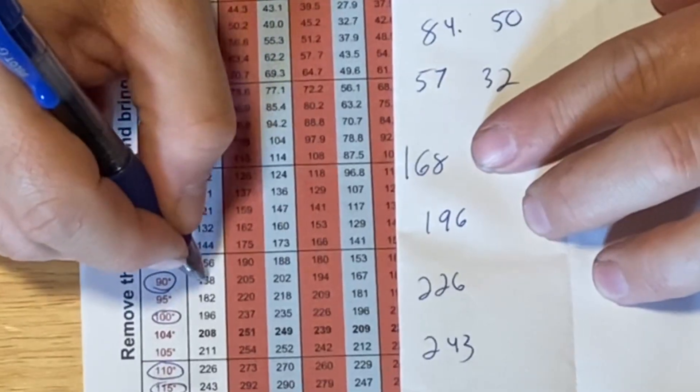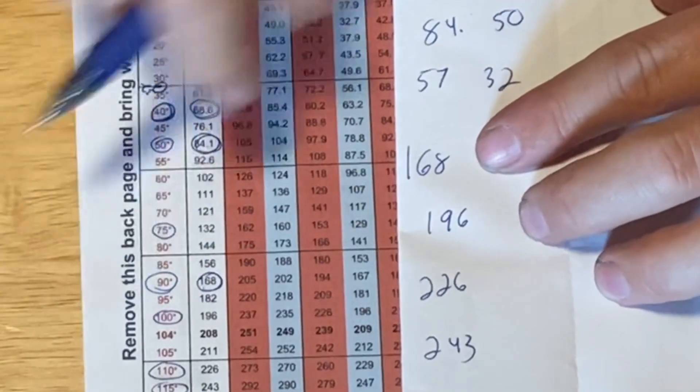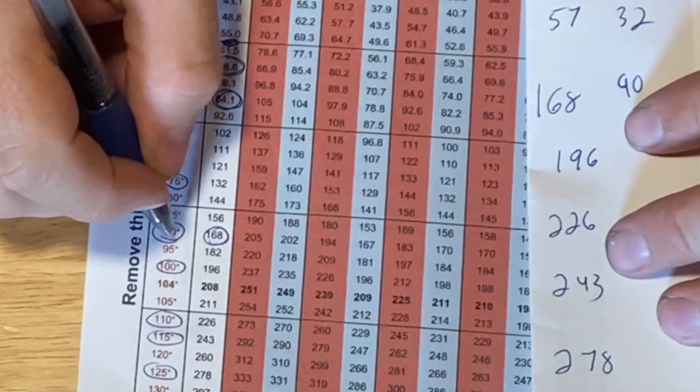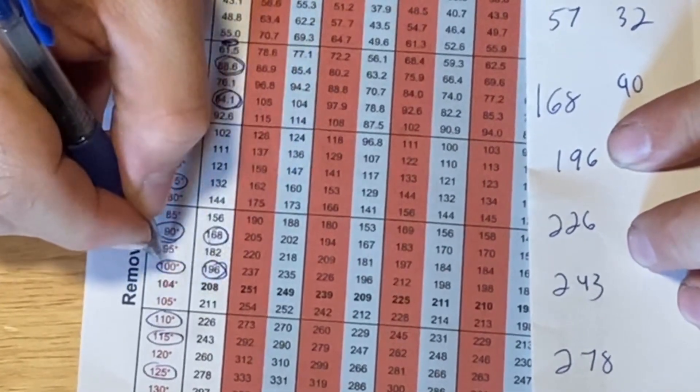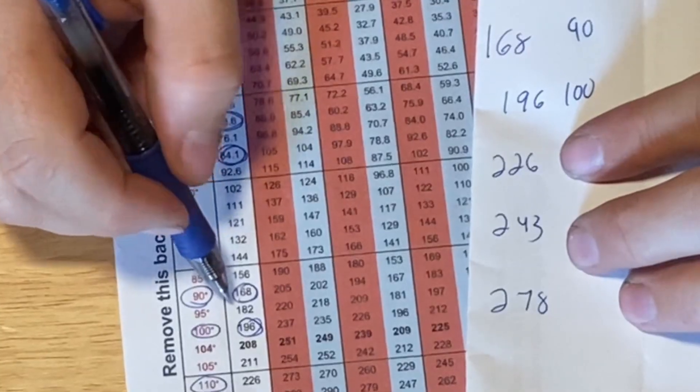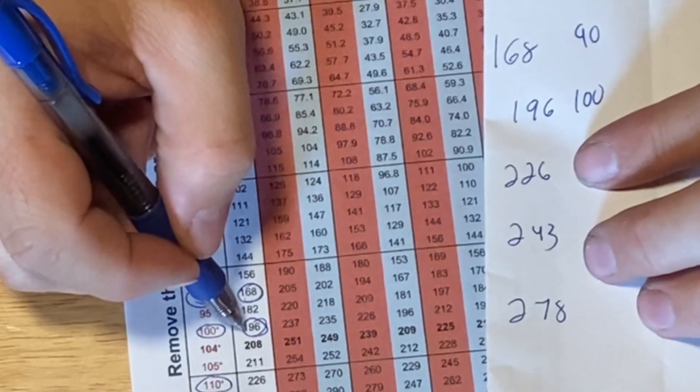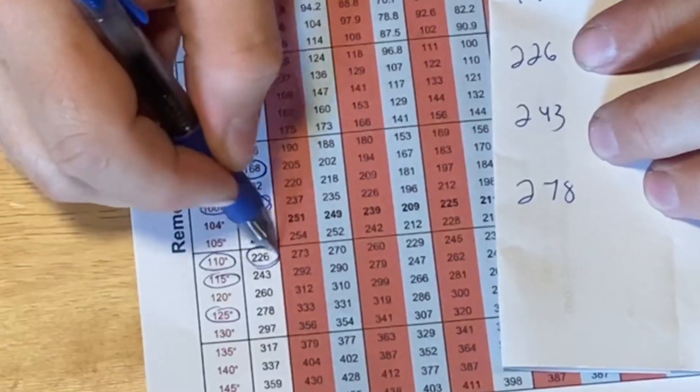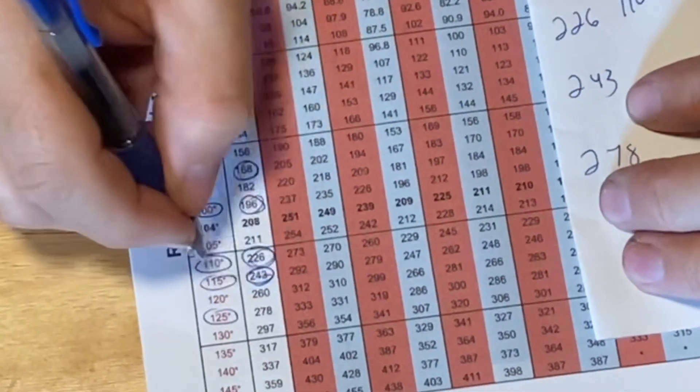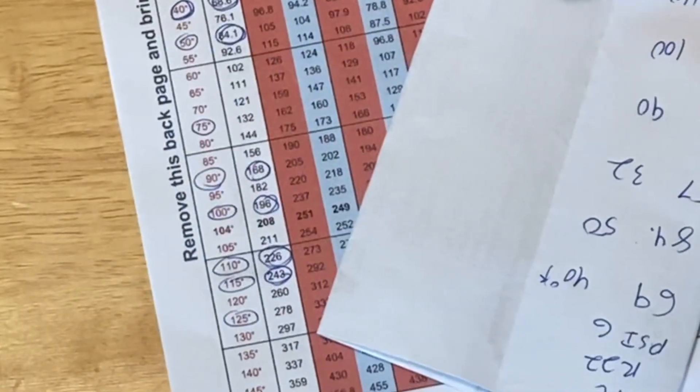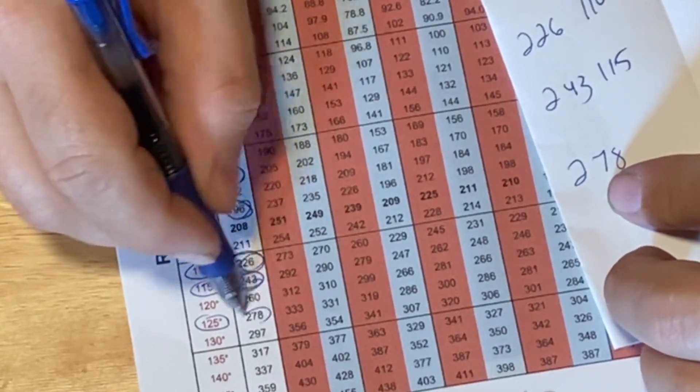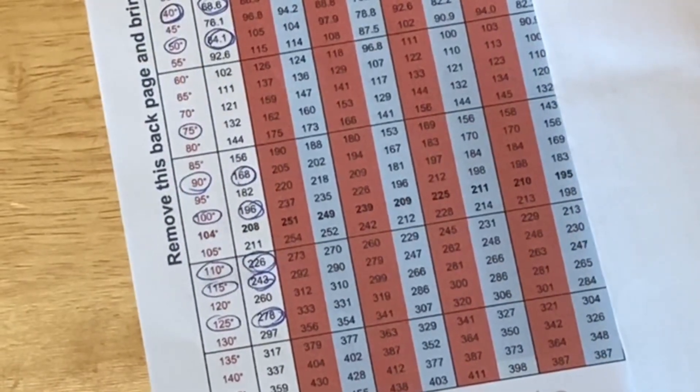Next on the list we have 168. So this could be the high side the red gauge. 168 converts to a saturated temperature of 90 degrees Fahrenheit. 90 would be warmer than the air temperature outside. So we have another temperature of 196. 196 converts to a saturated temperature of 100 degrees Fahrenheit. Now we have 226. That converts to a saturated temperature of 110. And we have 243 converts to a saturated temperature of 115. And then we have our pressure of 278 converts to a saturated temperature of 125 degrees Fahrenheit.